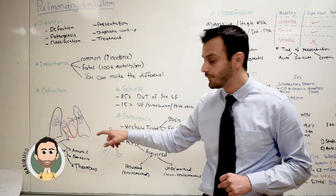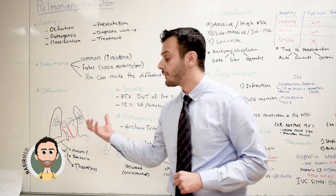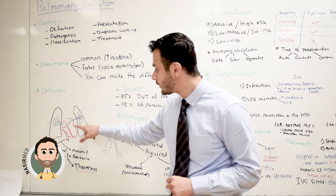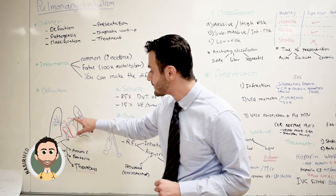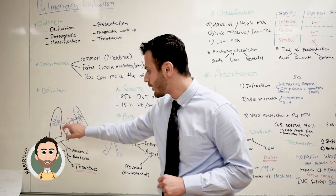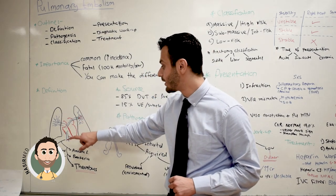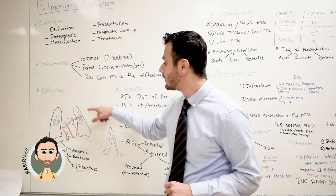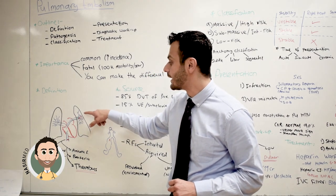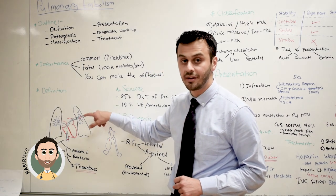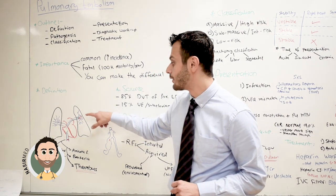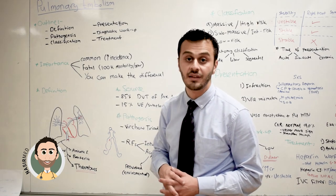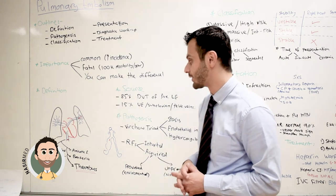Once it's in the right ventricle, the right ventricle will pump it out through the pulmonary trunks, and from the pulmonary trunks it will eventually reach the distal pulmonary arteries and obstruct some of them.